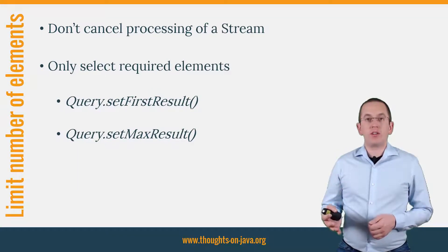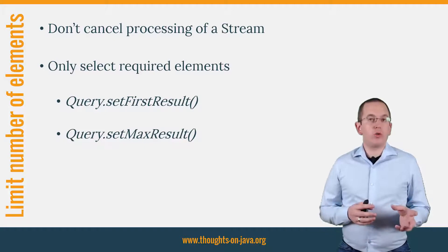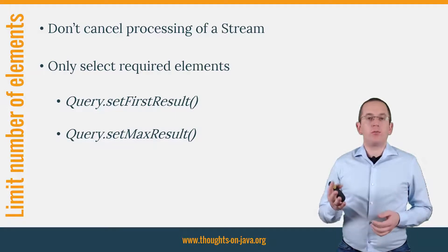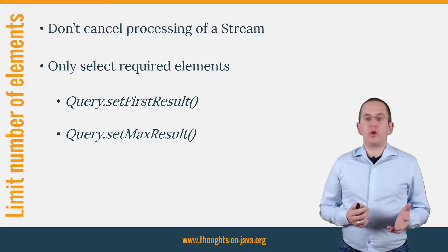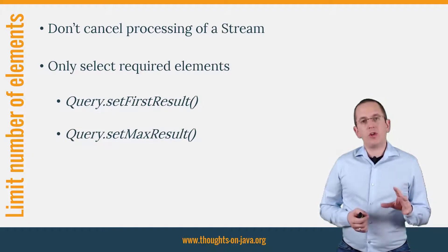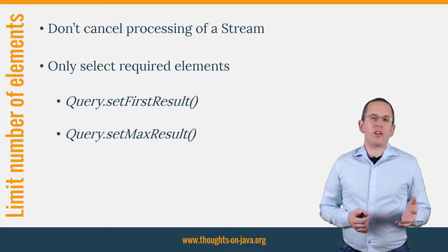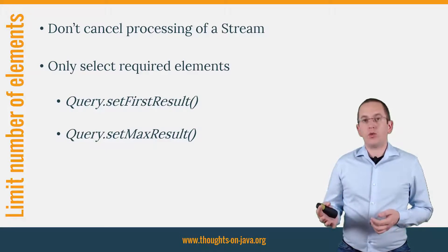Another thing you shouldn't do is limiting the number of elements in the stream. The Stream API provides several methods to cancel the processing or to retrieve certain elements from the stream, and you can do the same within your queries. You should only select the database records that you want to process in your application. So if you already know that you just need a certain number of records, you should limit the size of the result set within the query. Typical examples are queries that select the most recent record that fulfills certain criteria or that retrieve a list of records that will be presented in a paginated list in the UI.